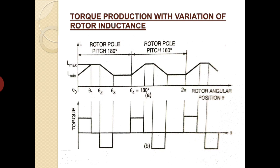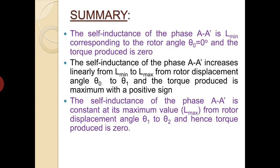From the graph it is clear that when there is no change in inductance, the torque produced by the machine is equal to 0. To summarize: the self-inductance of phase A-A' is minimum corresponding to rotor angle θ = 0°, and the torque produced at that time is 0.